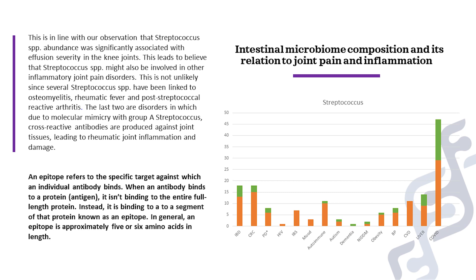As for the chart, green means health-associated data while orange is disease-associated. As you can see, there's a lot more orange for the genus streptococcus and its species. So how does one rectify their microbiome in an attempt to address their health concerns?